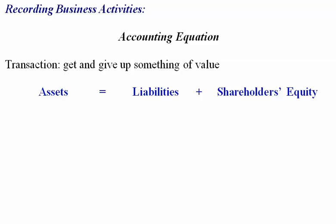The way it works is that when you have a transaction, you are going to, as a company, get something and give up something of value. To reflect that in the accounting equation, we have our assets, which are the company's economic resources — the things the company has to use to help it operate its business, and hopefully profitably.